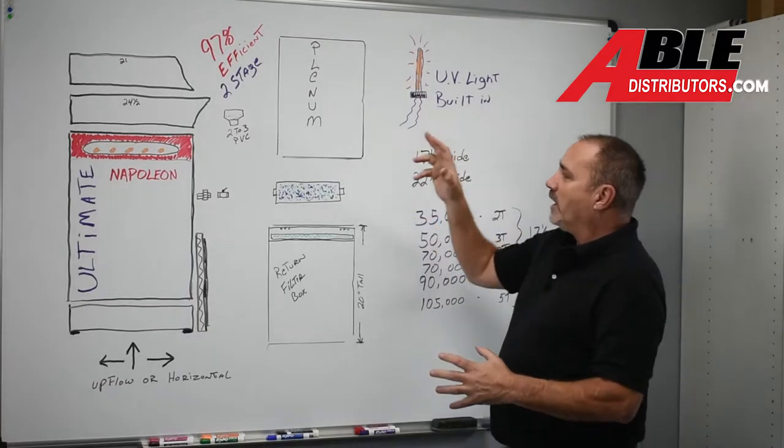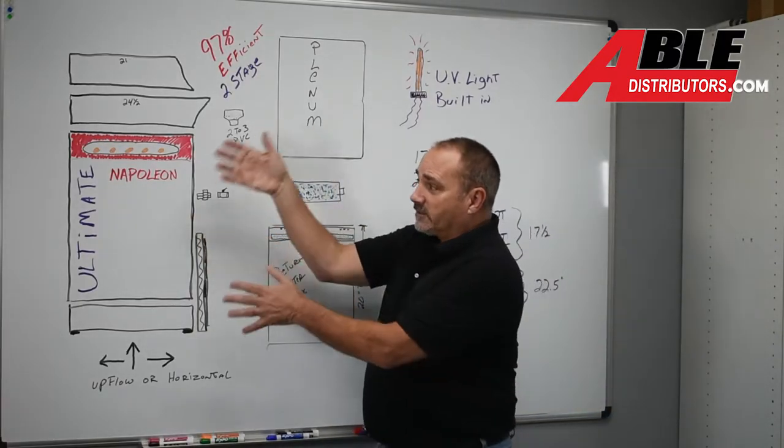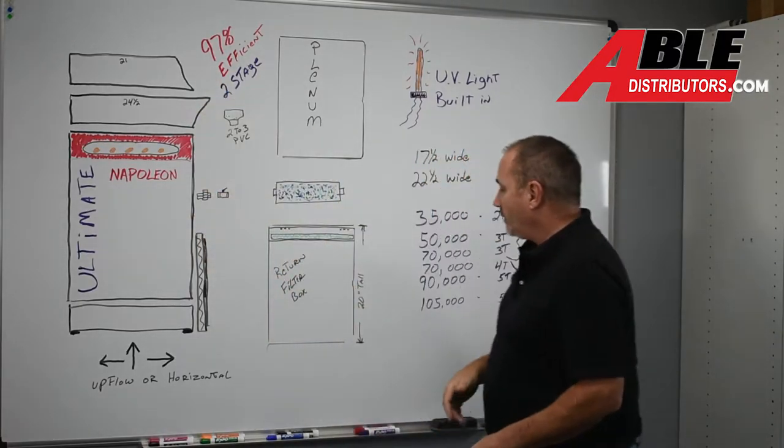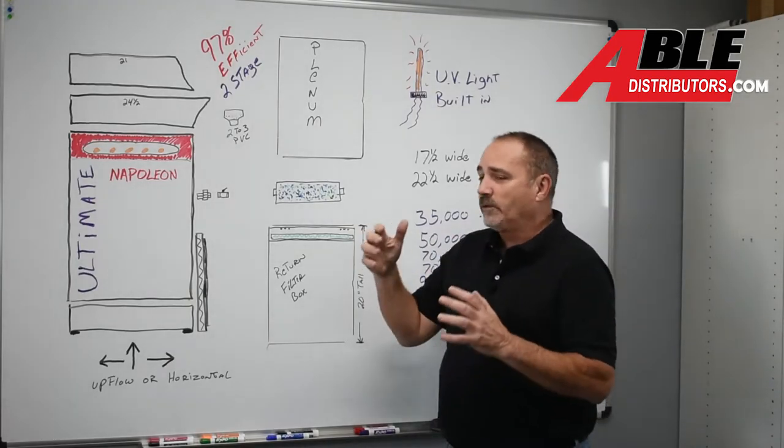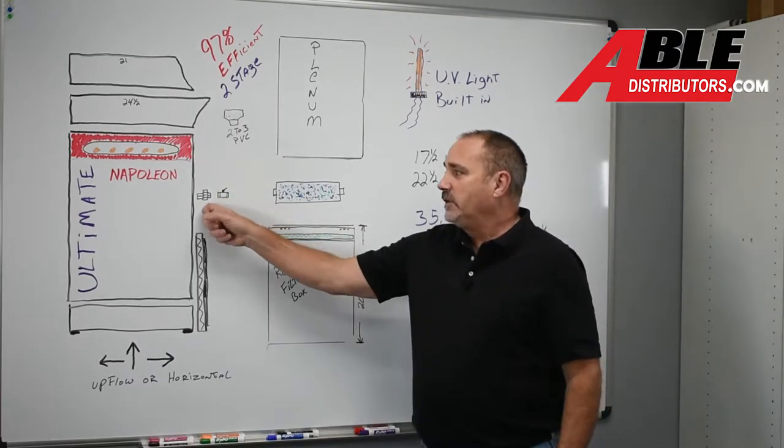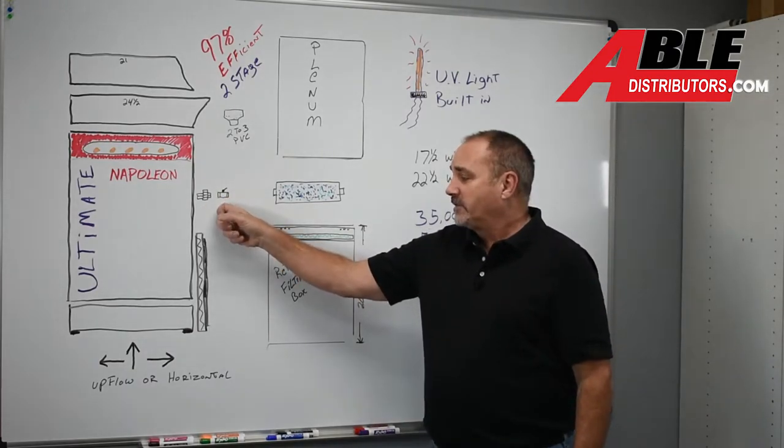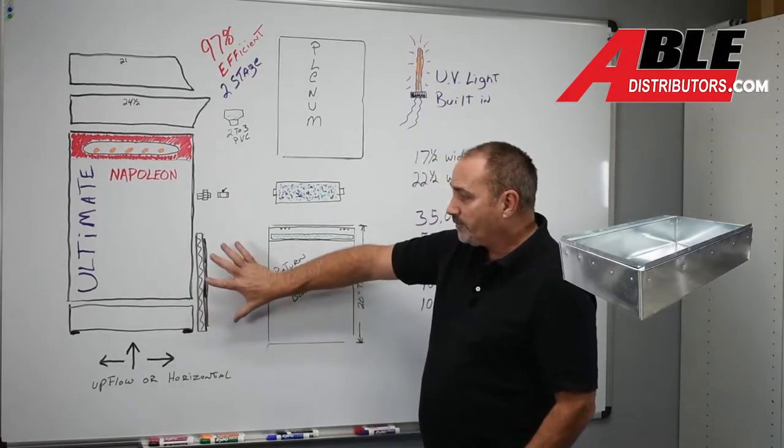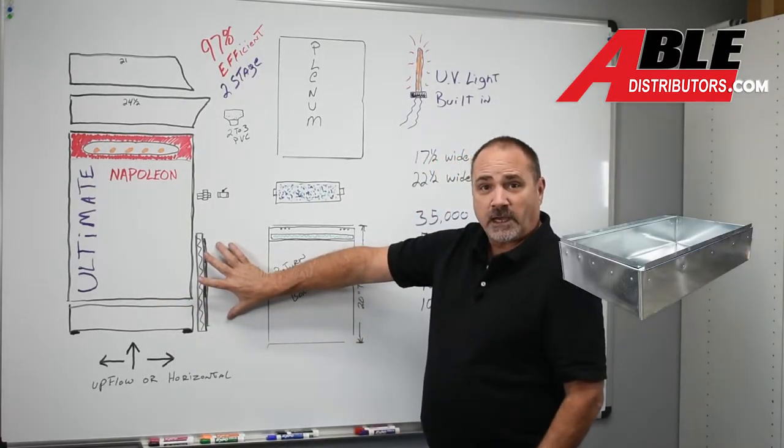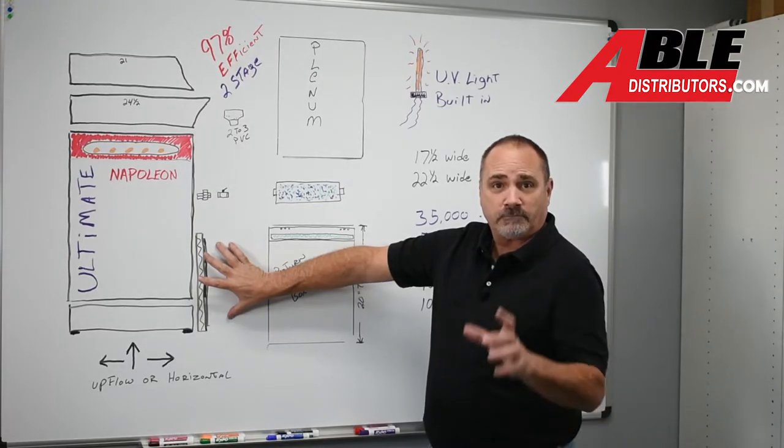Along with the UV light, the stainless steel door, the stainless steel primary, secondary, the transitions, some of the things you need to know when you're going through this guide is we're going to try and guide you to every single thing you need, including a new gas union, a new gas stop, a six inch tall return box so you can put a 20 inch filter on the side, whether it's one inch or an aftermarket pleated.